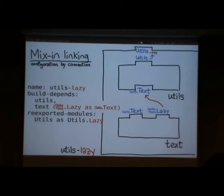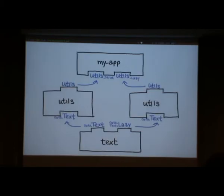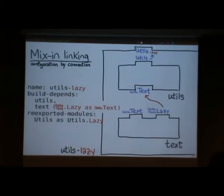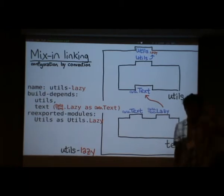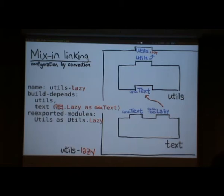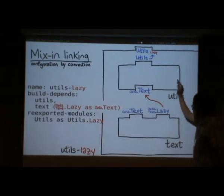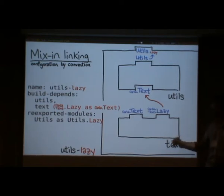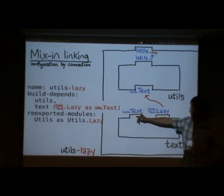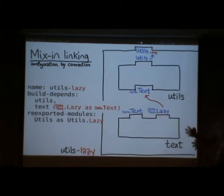Question: what happens when we need to use both strict and lazy text in the same module? And: do you recompile utils when you make utils-lazy? Yes! I said I cannot compile utils because I didn't have an implementation. So once I'm told what the implementation is, I compile utils with respect to that specific implementation. I'll have to compile it twice — once with Data.Text and once with Data.Text.Lazy. This is what you want, because the alternative is you don't get any inlining or optimization.